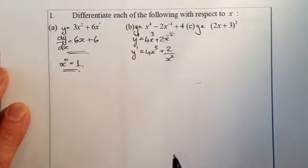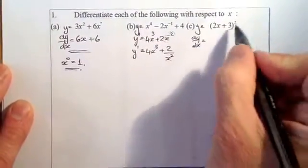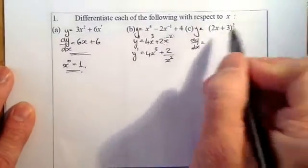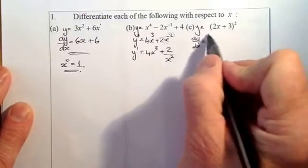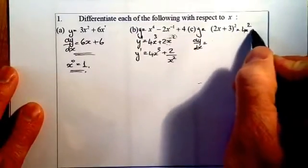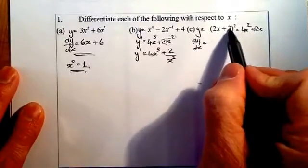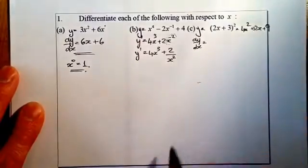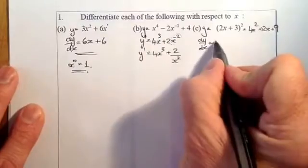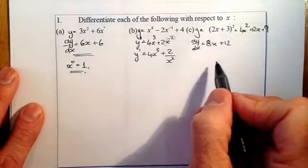For the next one — a squared bracket — I'll multiply it out first. Squaring (2x + 3): the first term squared gives 4x², the cross term doubled gives 12x, and the last term squared gives 9. So dy/dx of 4x² + 12x + 9 gives 8x + 12, with the constant 9 going to 0.